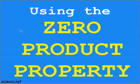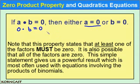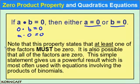In this screencast, we're going to use the zero product property. The zero product property is an extremely powerful tool in helping us solve quadratic equations. It uses the fact that if you multiply something by zero, the result will be zero. If we let a equal zero, we know that zero times b gives us zero. Or if we let b equal zero, a times zero also gives us zero. Note that this property states that at least one of the factors must be zero — it is also possible for all factors to be zero. Zero times zero is zero. This simple statement gives us a powerful result, most often used with equations involving the product of binomials.